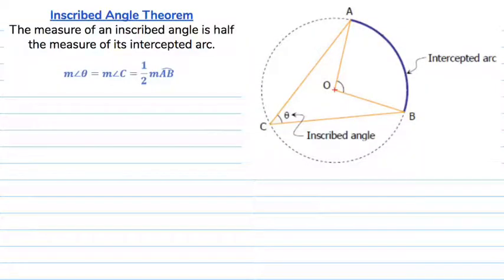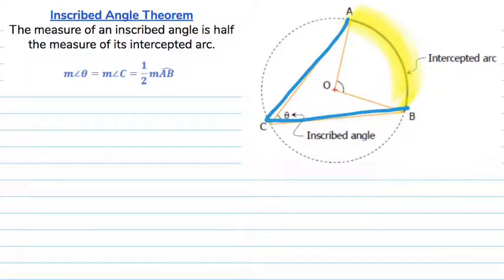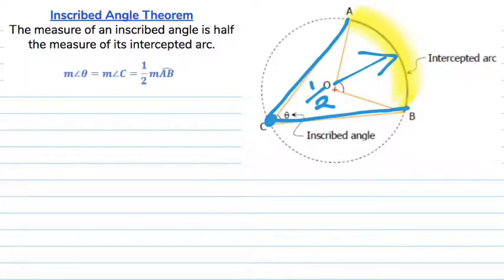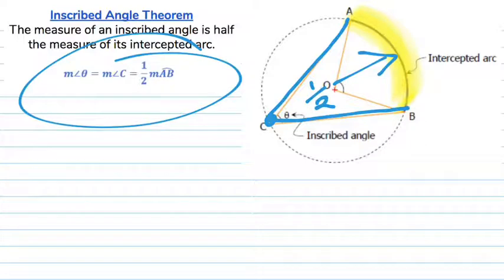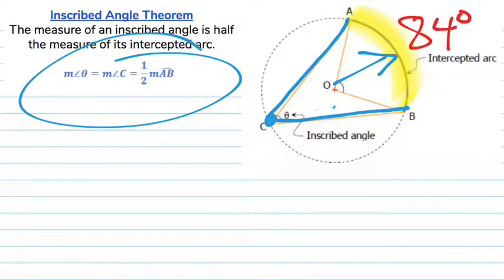First and foremost, the inscribed angle theorem basically states that when you have an arc, the angle created by the inscribed angle with its vertex on point C is always going to be half the measurement of the arc formed by the inscribed angle's endpoints. So if this arc is 84 degrees, half of that would be the value of the inscribed angle, which would be 42 degrees.